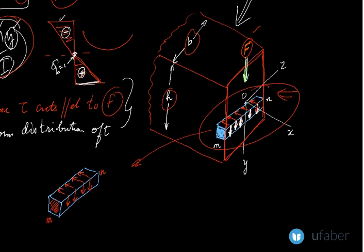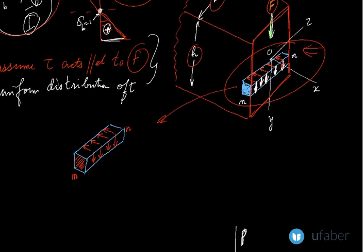Taking this element and redrawing it as a free body diagram, we can see that per the first assumption, the shear stress due to the shear load acts as shown by the white arrows on the vertical faces of this element.